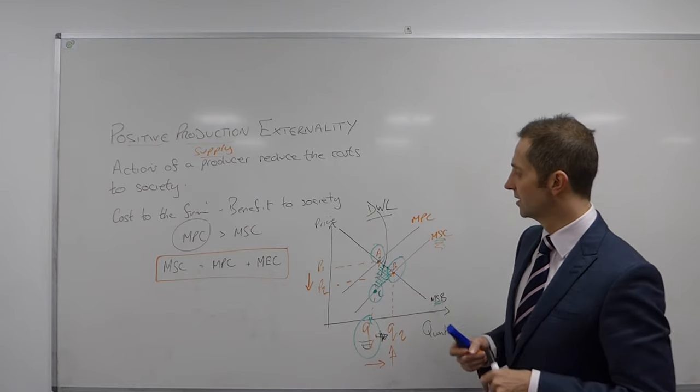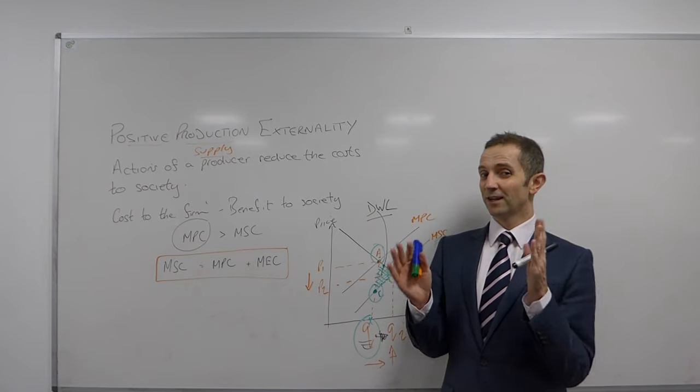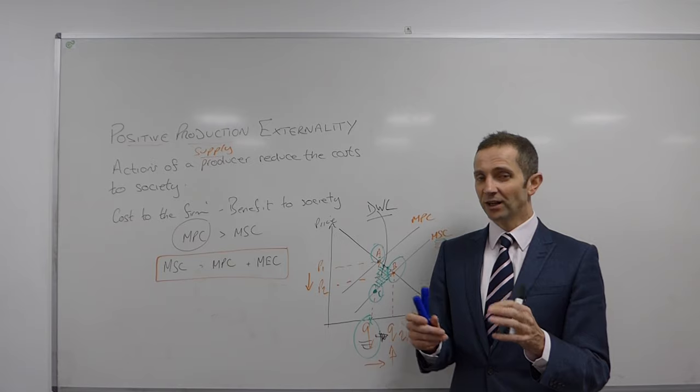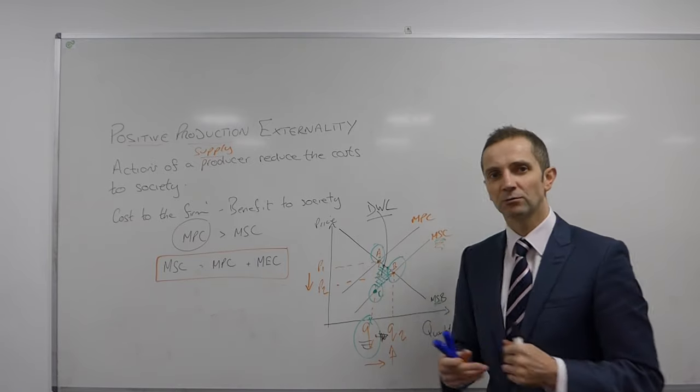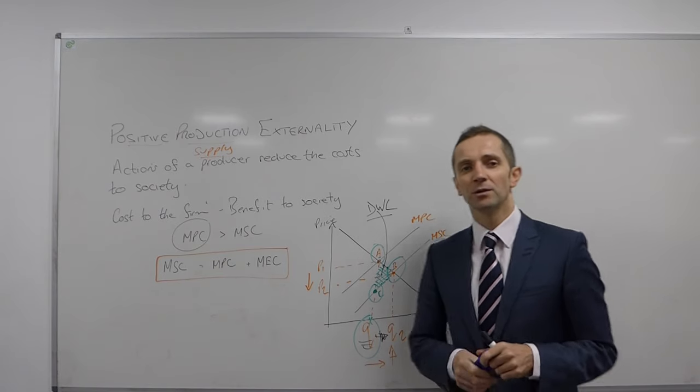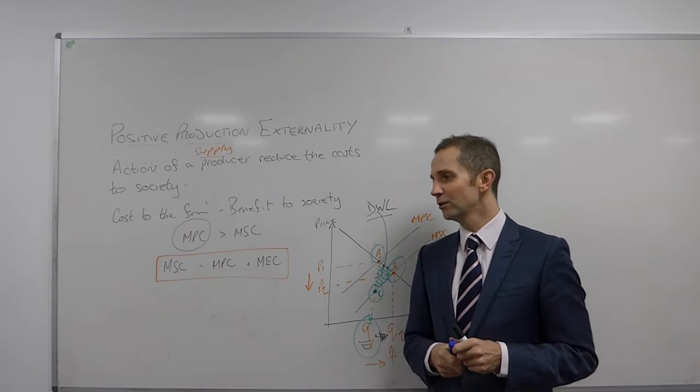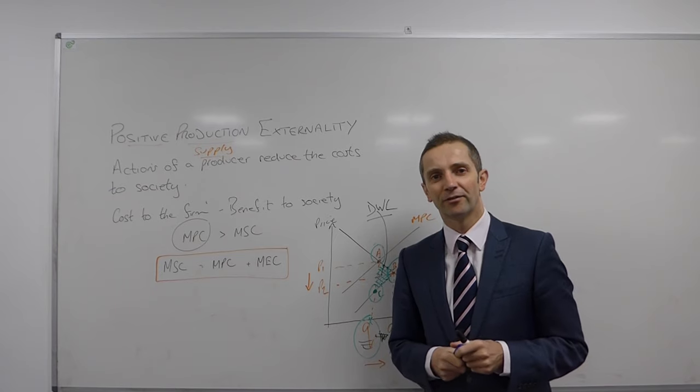Okay, that's it. The next in the series of the externality diagrams, obviously, then considers, well, how do we get from A to B? What can the government do to encourage that? And I look forward to bringing you that in the very near future. But, bye for now.